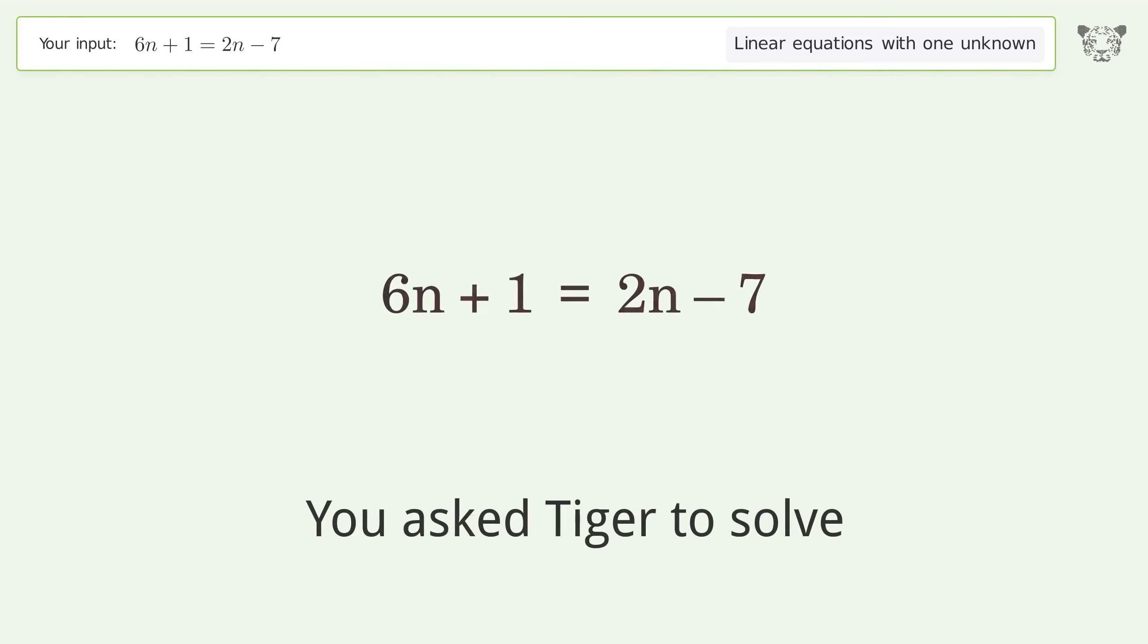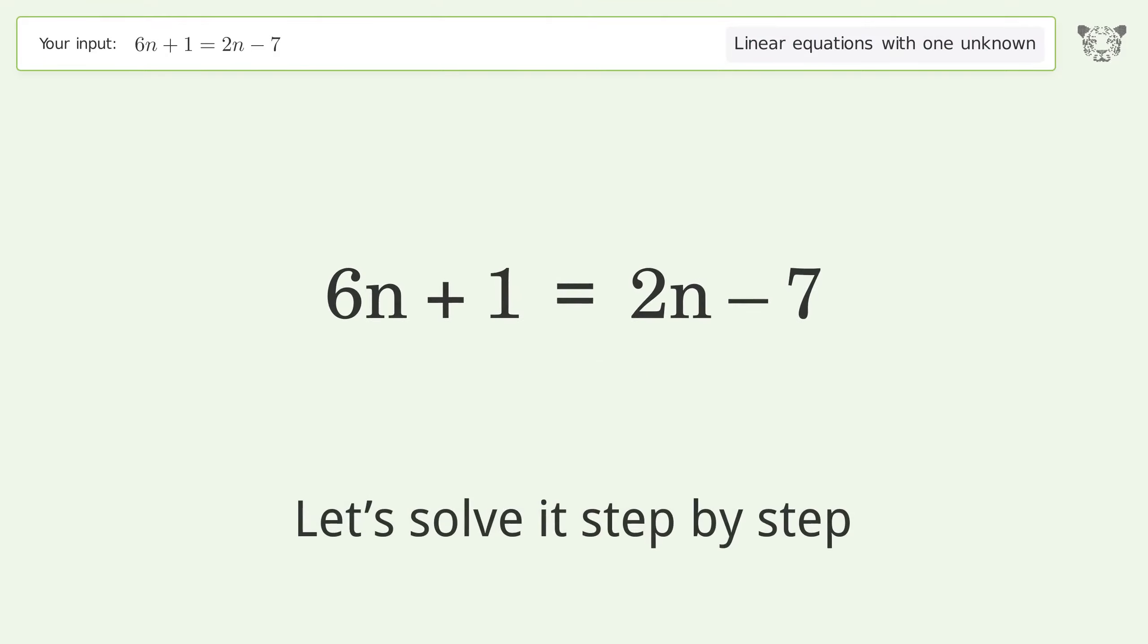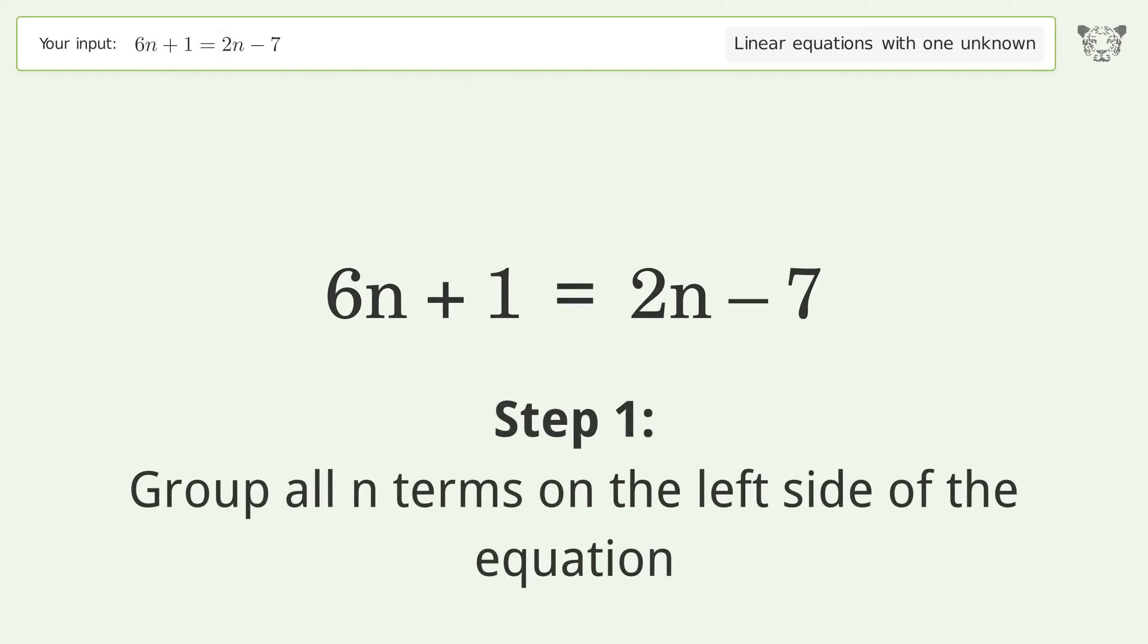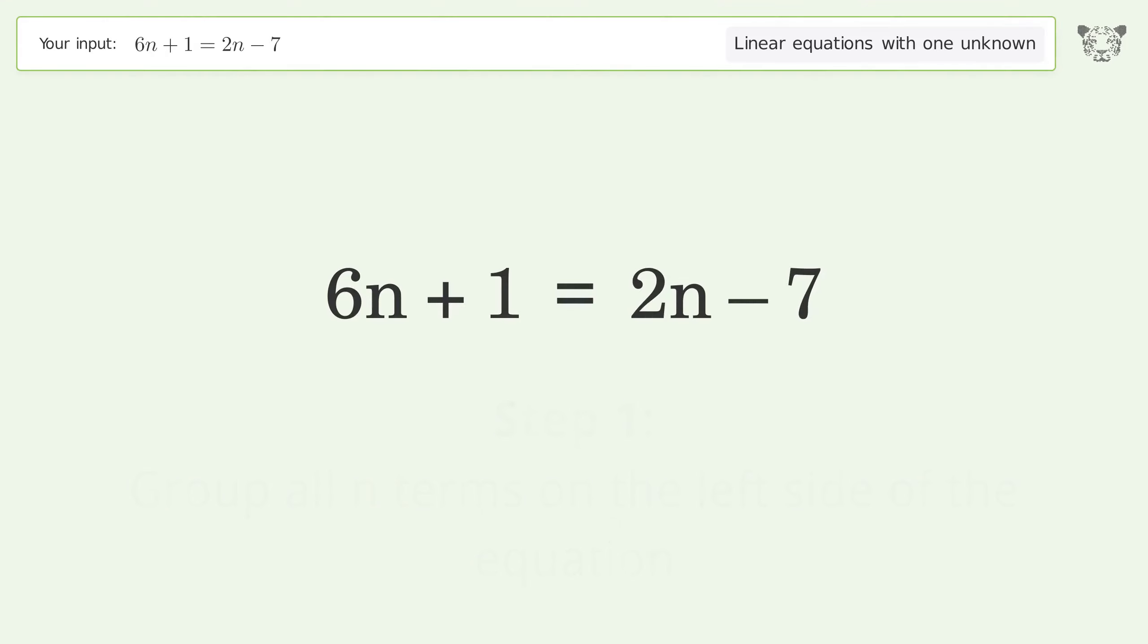You asked Tiger to solve this. This deals with linear equations with one unknown. The final result is n equals negative 2. Let's solve it step by step. Group all n terms on the left side of the equation. Subtract 2n from both sides.